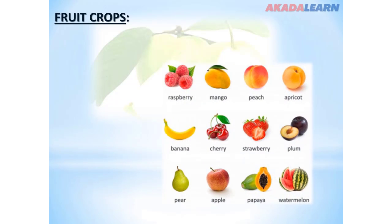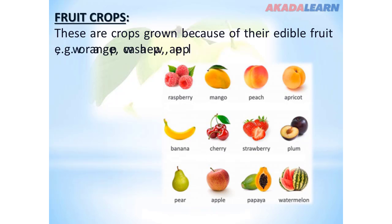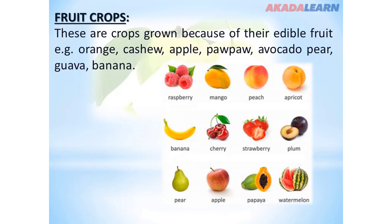We have the fruit crops. These are crops grown because of their edible fruits. Examples of such crops include orange, cashew, apple, guava, avocado pear, banana, and many more.